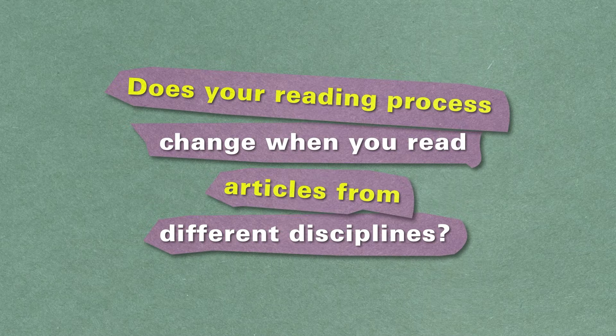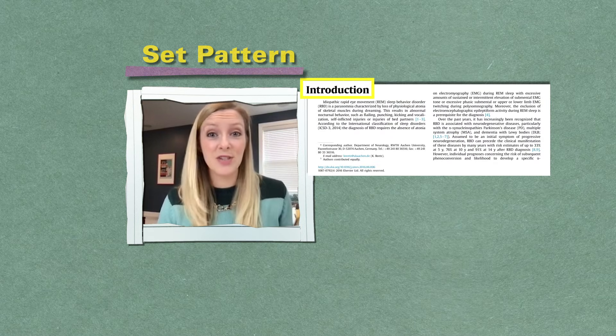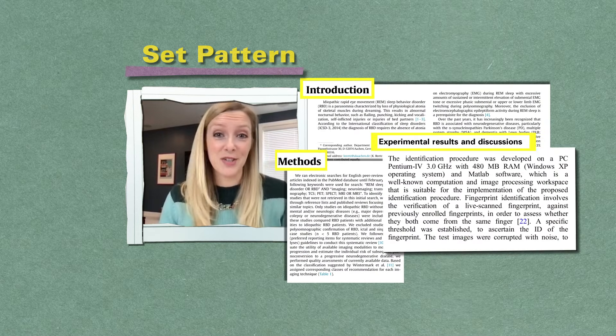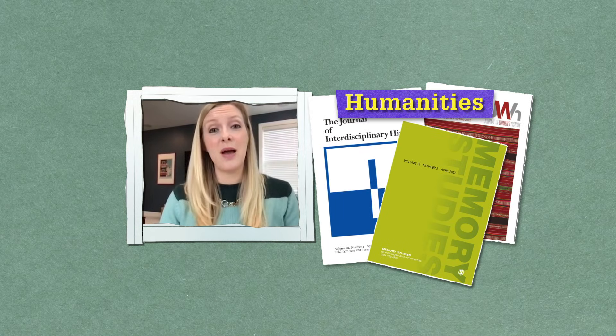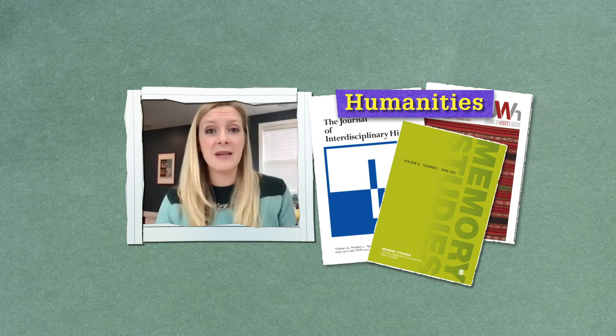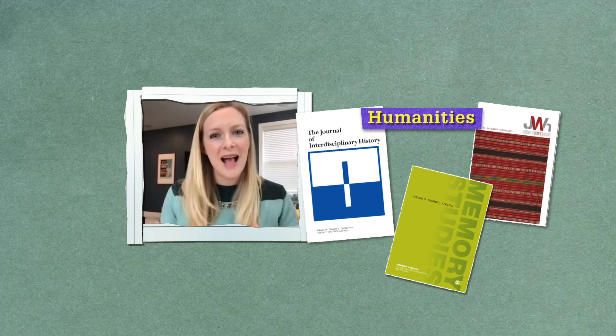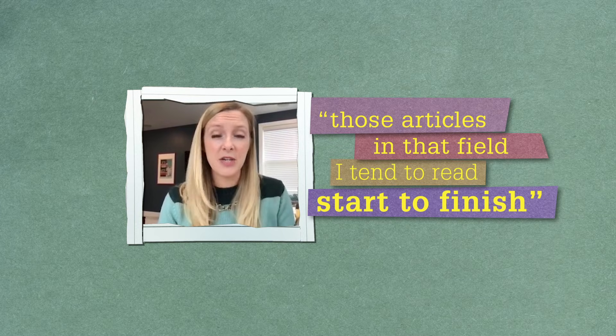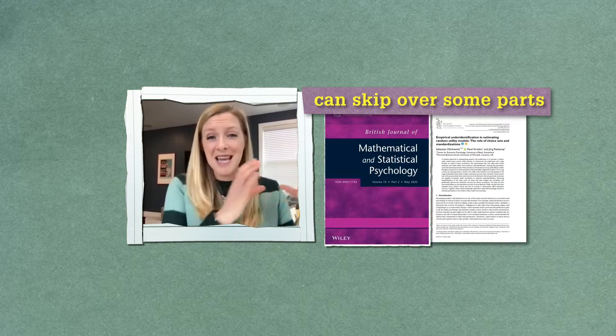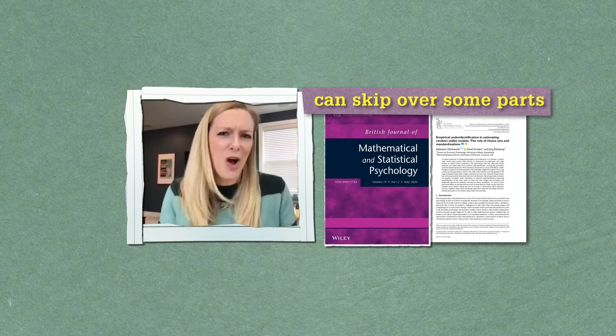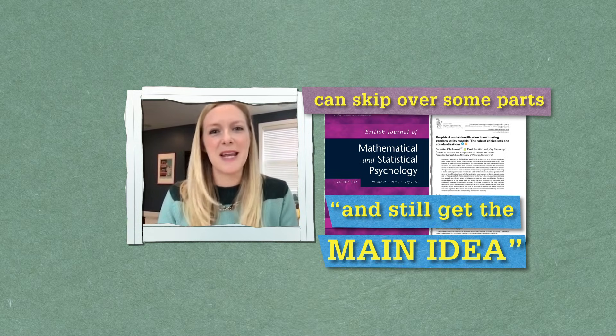Does your reading process change when you read articles from different disciplines? In a lot of empirical fields like engineering and science, what's really cool about articles is that they tend to follow a really set pattern: introduction, methods, results, and then discussion. But in the humanities, you end up reading a little bit differently because they're not necessarily packaged quite as predictably. So those articles I tend to read start to finish, whereas in empirical fields, sometimes you can skip the methods and still get the main idea from the paper.